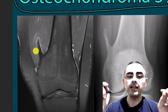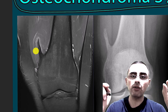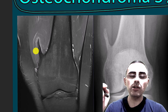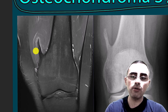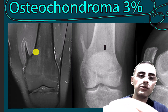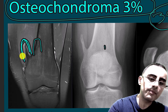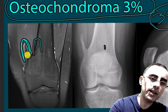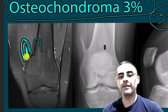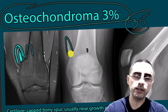Osteochondroma is also a benign tumor and usually requires no treatment. On imaging you can clearly see the cartilage cap overlying the bony part — this cartilage cap is the defining characteristic of osteochondroma.